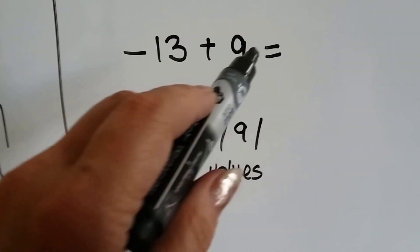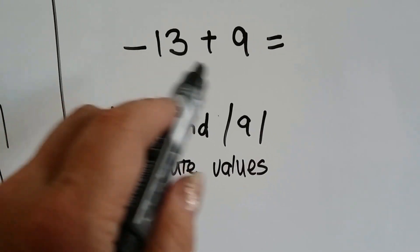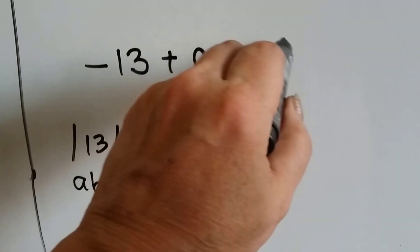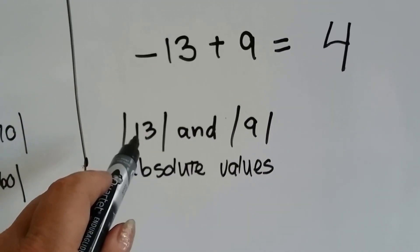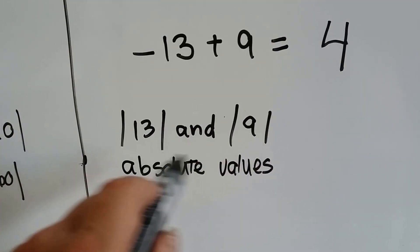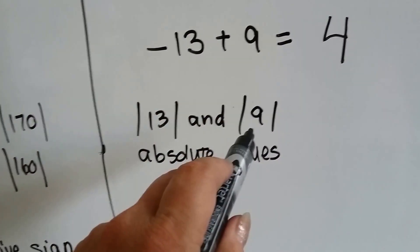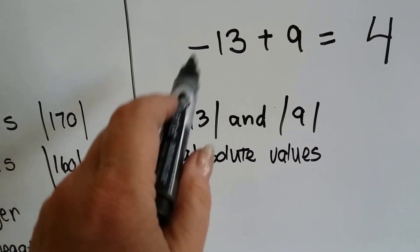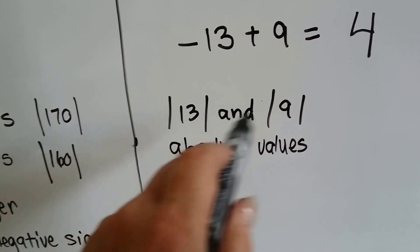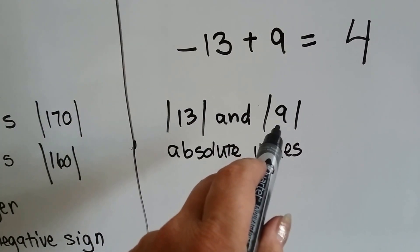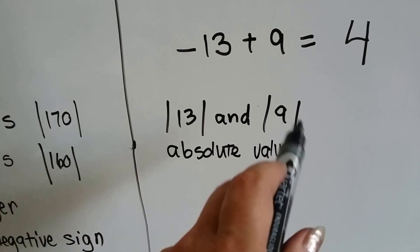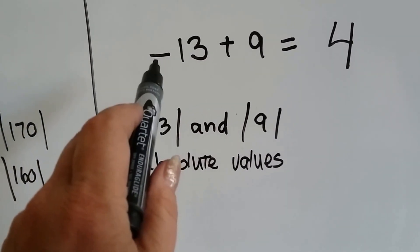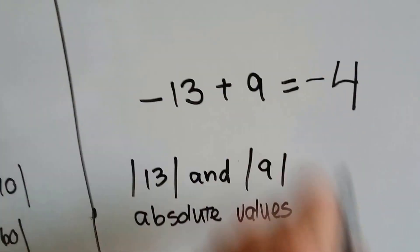Now let's confirm using the absolute value method. With negative 13 plus 9, we find the difference between 9 and 13: that's 4. The absolute value of negative 13 is 13, and the absolute value of positive 9 is 9 — they don't have a sign, it's just how far they are from zero. Negative 13 is 13 spaces from zero; positive 9 is 9 spaces from zero.